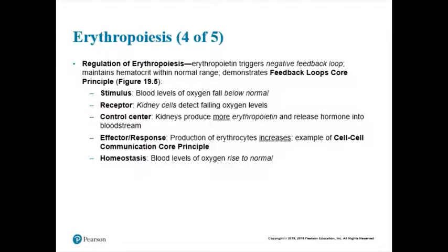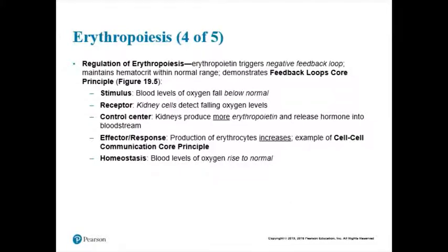Think back to A&P 1 and negative feedback. There were key players: the stimulus — the change in the environment — something to detect the change called the receptor, a control center that comes up with a plan, and an effector to enact the plan. These are the major players in this negative feedback loop for maintaining blood levels.